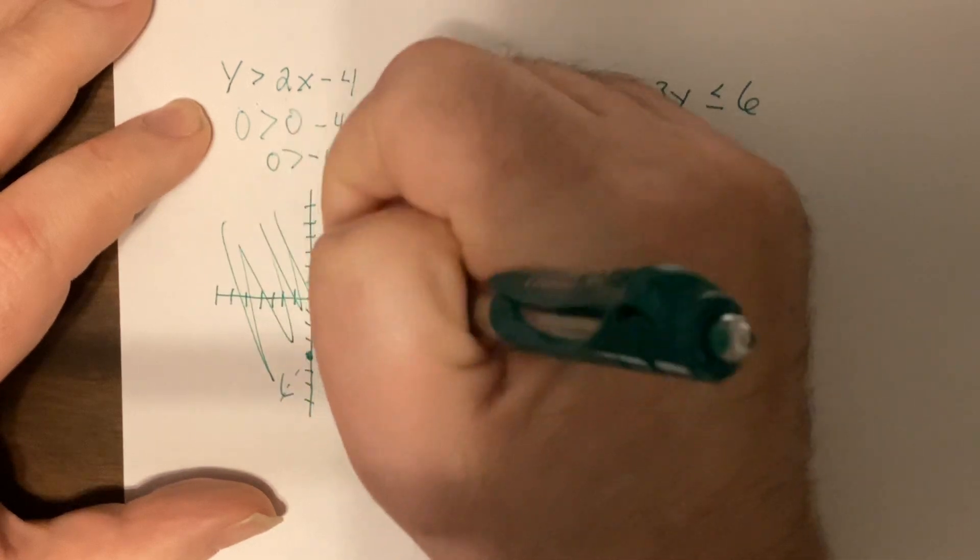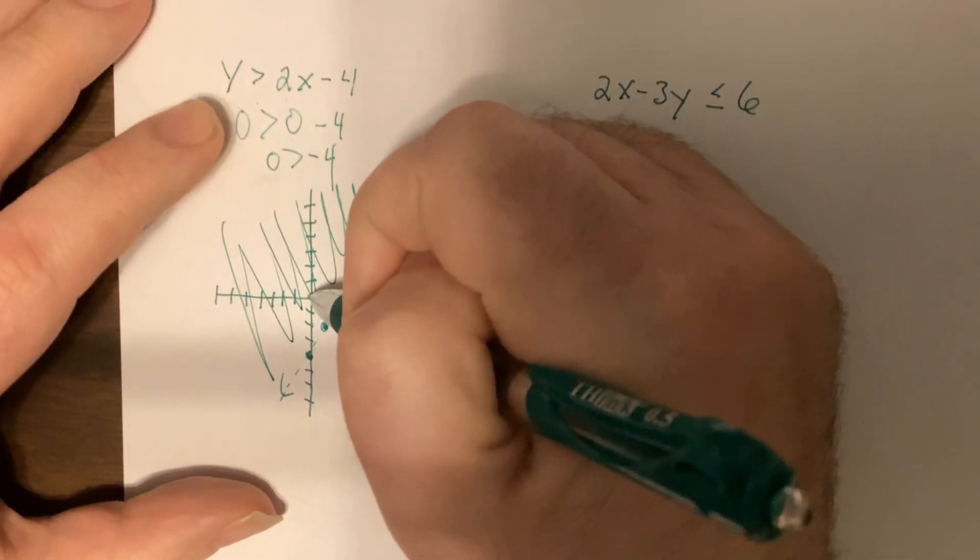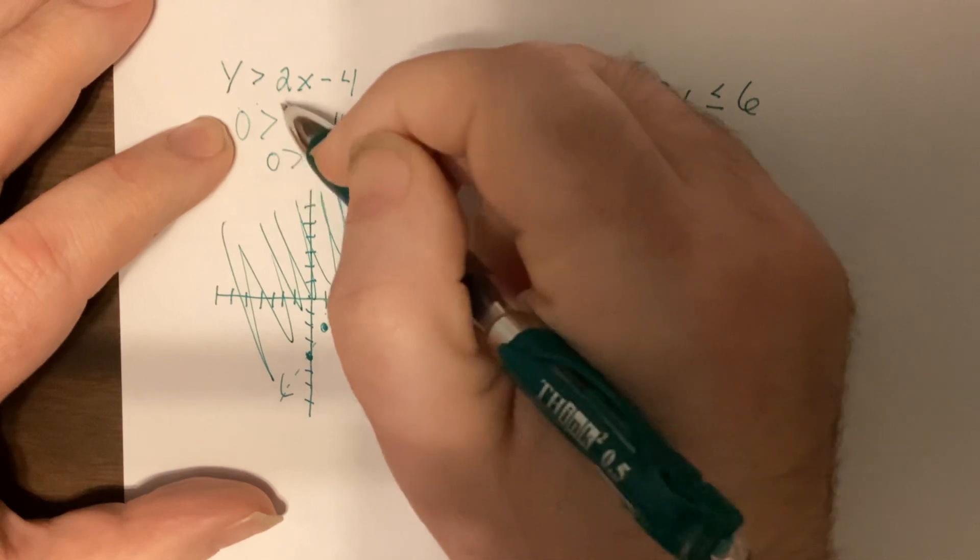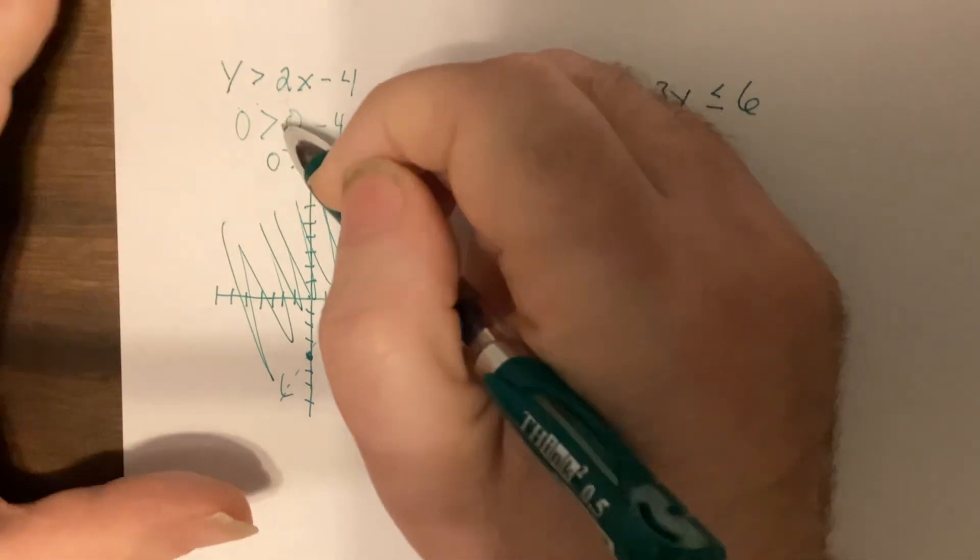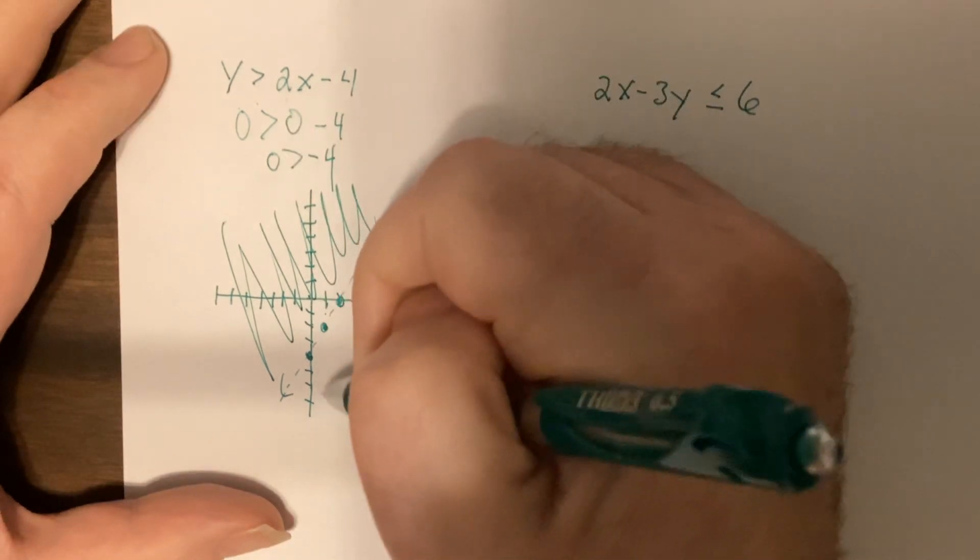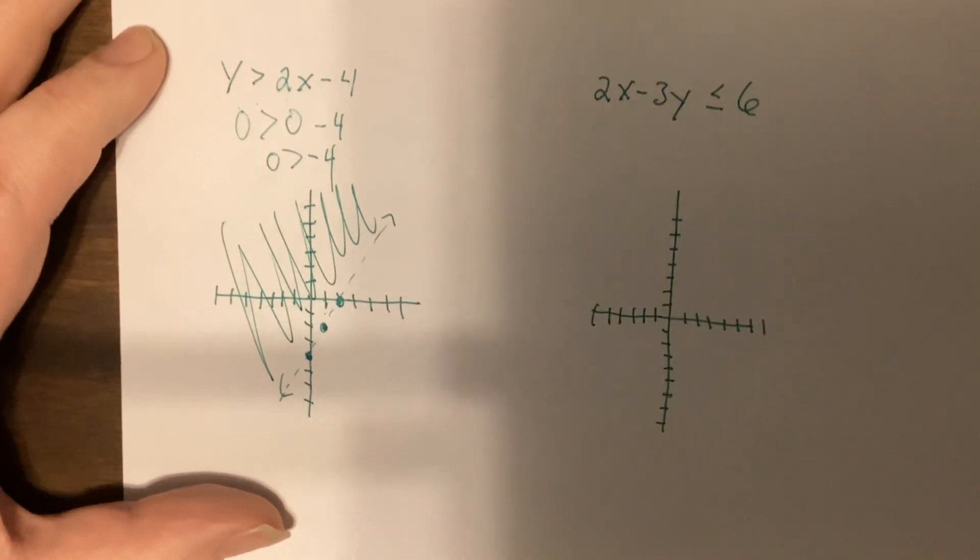So it'd be this side. The side that has zero, zero. Now if I had put zero, zero in and it would have caused it to be false, I would have shaded the side that did not have zero, zero.